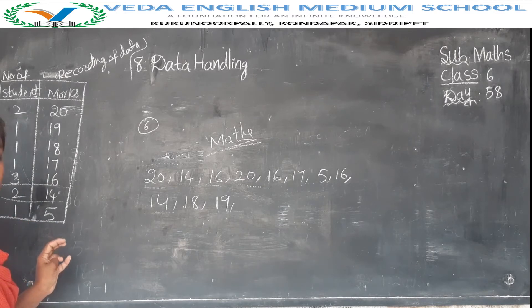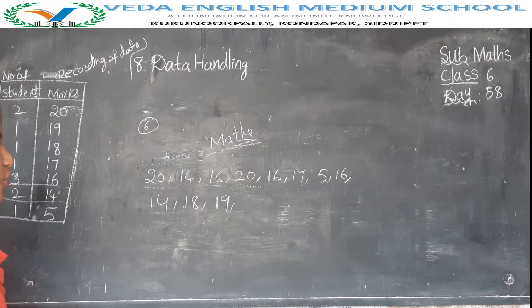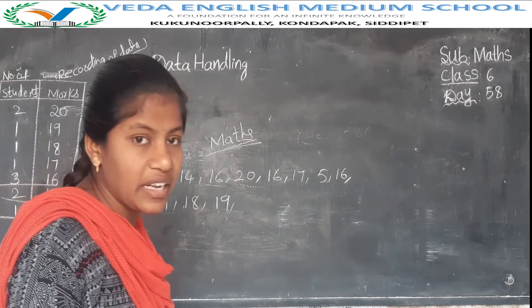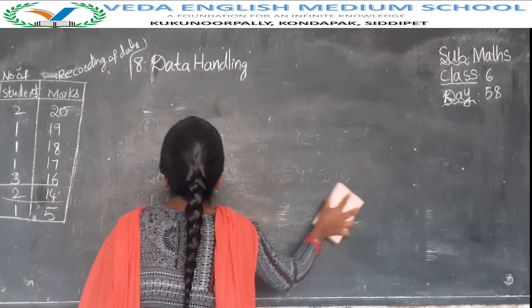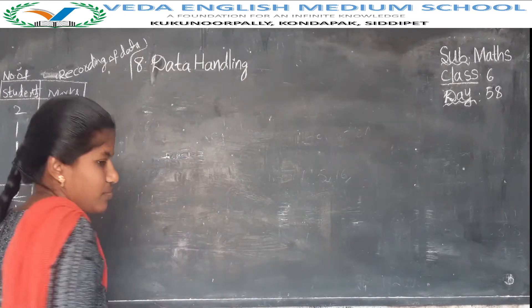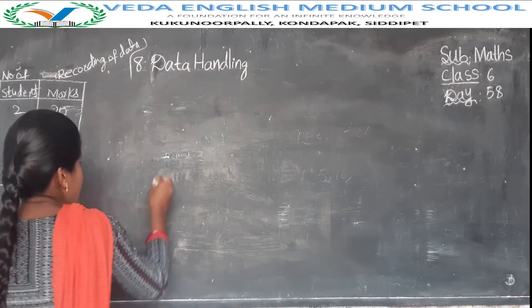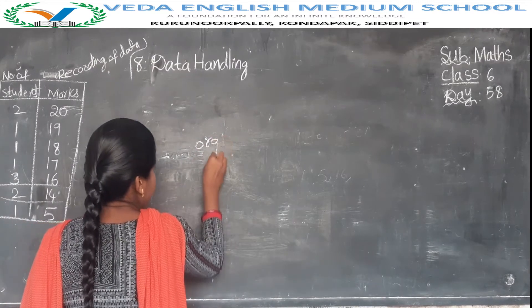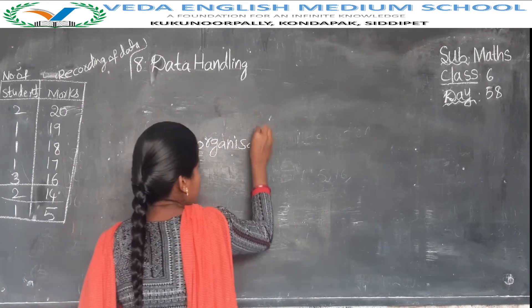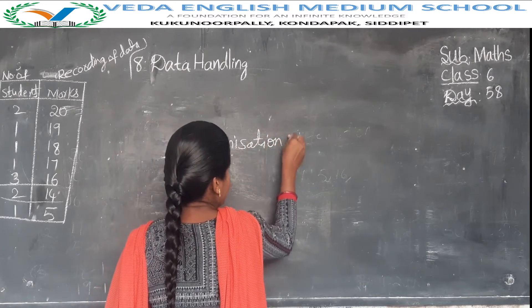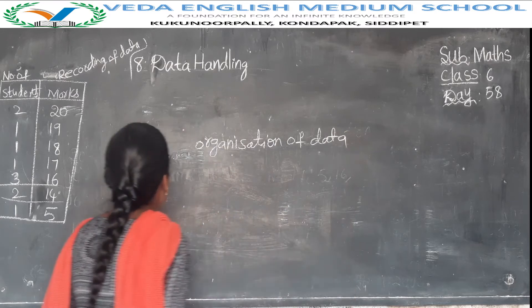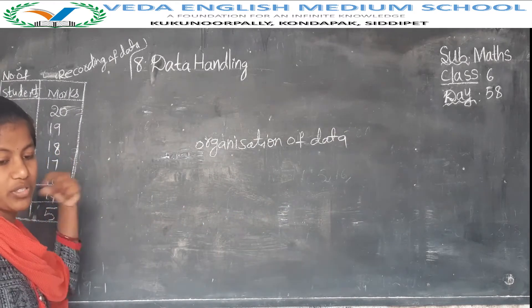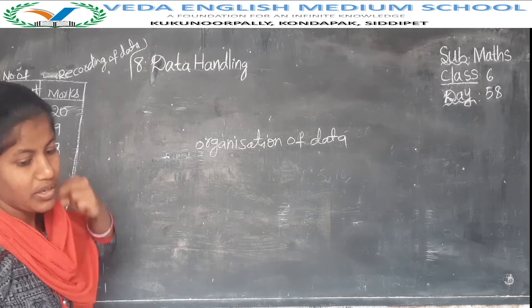By using this recording, we then find the organization of data. Organization of data means instead of writing numbers directly, we use tally marks in the box.